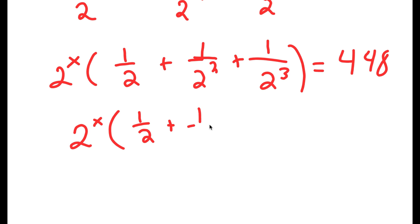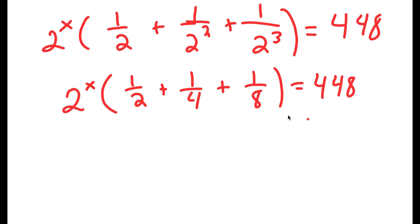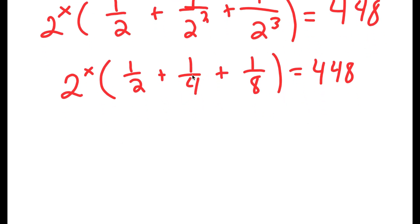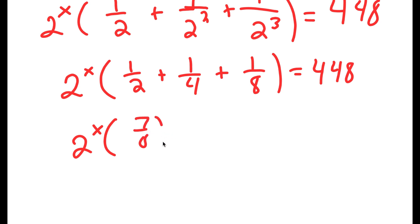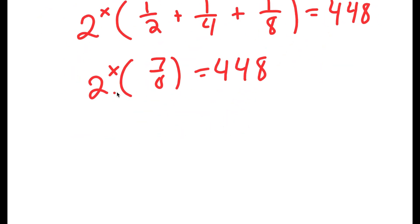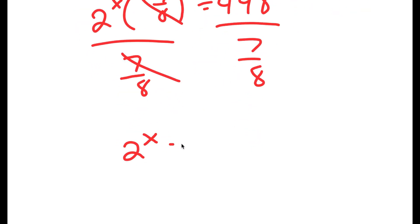This is equal to 1 half plus 1 over 4 plus 1 over 8 inside the brackets. Now 1 half plus 1 fourth is 6 over 8, which equals 3 over 4. And 3 over 4 plus 1 eighth equals 7 over 8. So now I have 7 over 8 times 2 to the power of x is equal to 448. To isolate 2 to the power of x, I divide both sides by 7 over 8, so 2 to the power of x equals 448 times 8 over 7.